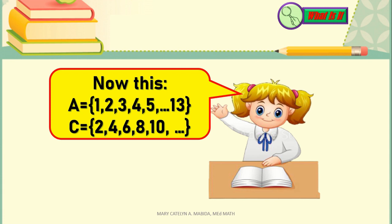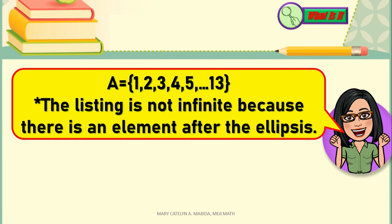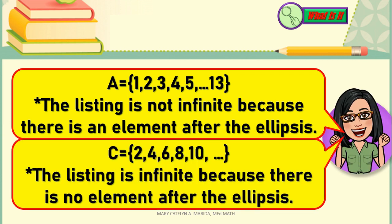Do you notice anything similar between Set A and Set C? Well then, you got it right. The sets are using ellipses. Now what is the difference between the ellipses in Set A and the ellipses in Set C? Now, here we have it. In Set A, the ellipses is between two numbers, 5 and 13. Now, this listing is not infinite because there is an element after the ellipses. In our case, or in this case, there is 13 after the ellipses. And for Set C, the ellipses is at the end of the last number in the set. So the listing is infinite because there is no more element after the ellipses.